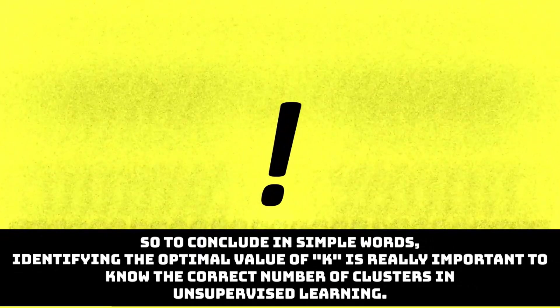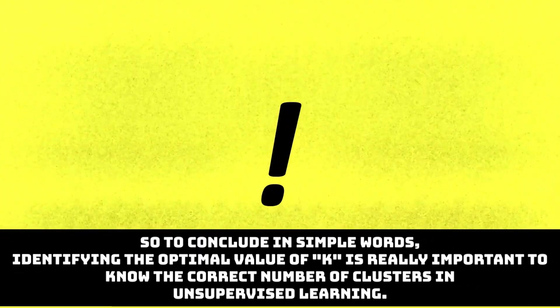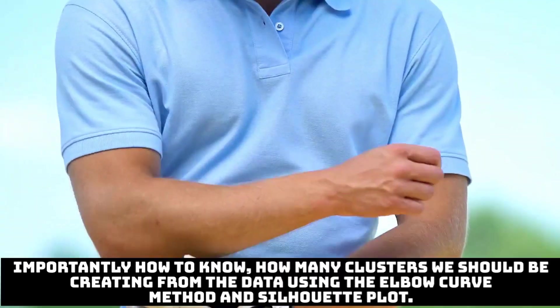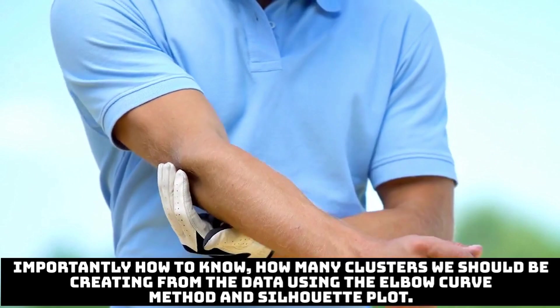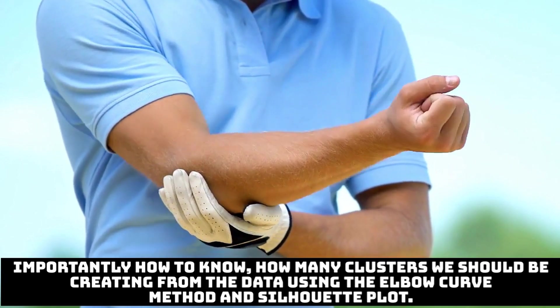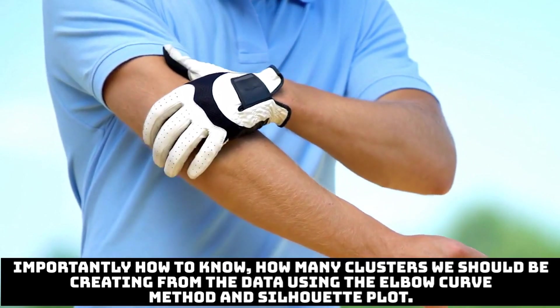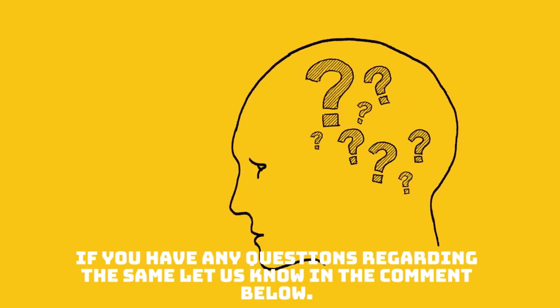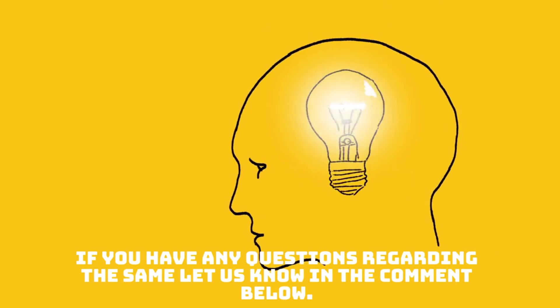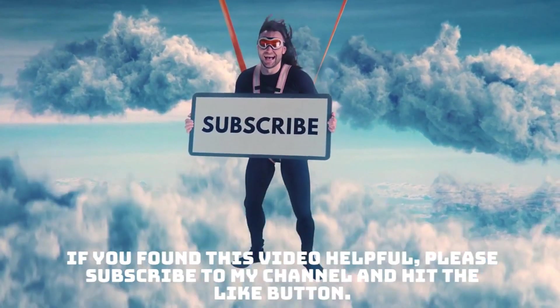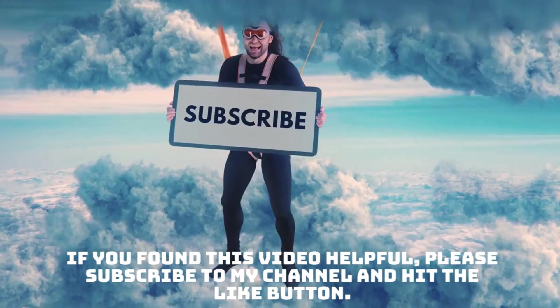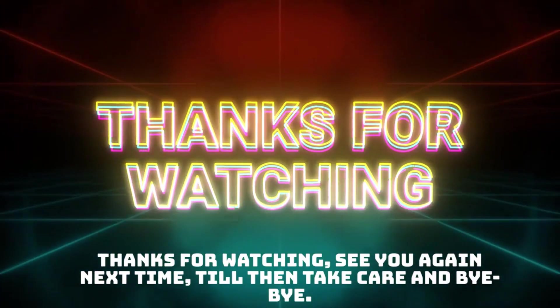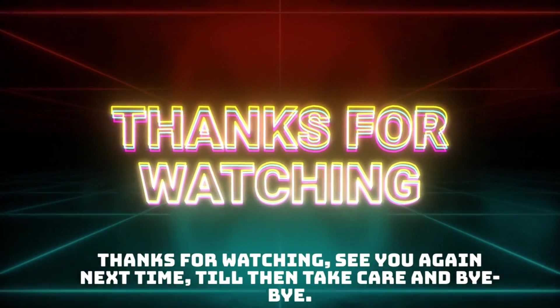So to conclude in simple words, identifying optimal value of k is really important to know the correct number of clusters in unsupervised learning. Importantly, how to know how many clusters we should be creating from the data using different methodologies. We saw elbow curve method and silhouette plot. And that's how we come to an end of this video. If you have any questions regarding the same, let us know in the comment below. If you found this video helpful, please subscribe to my channel and hit the like button. Thanks for watching, see you again next time. Till then, take care and bye bye.